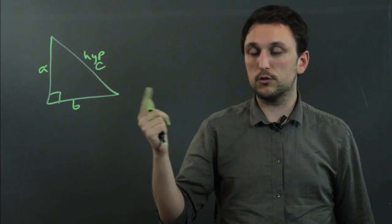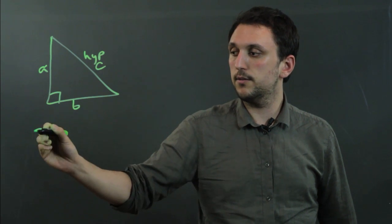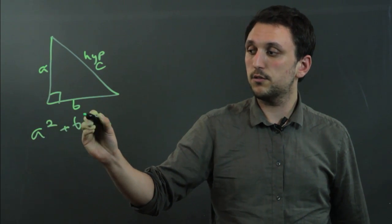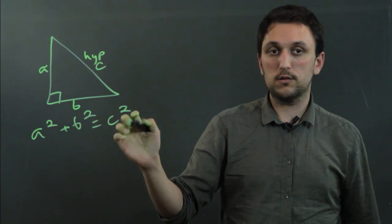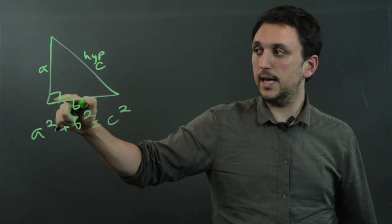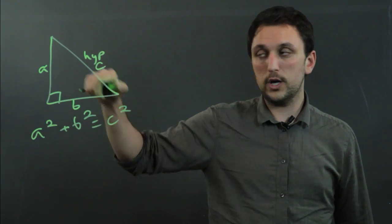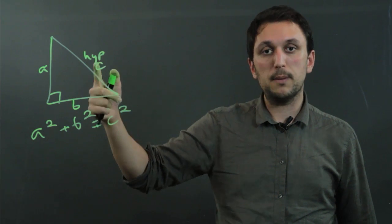we have the Pythagorean theorem, which is true for all right triangles. And that says that A squared plus B squared equals C squared, meaning the length of A squared plus the length of B squared always equals the length of C, or the hypotenuse, squared.